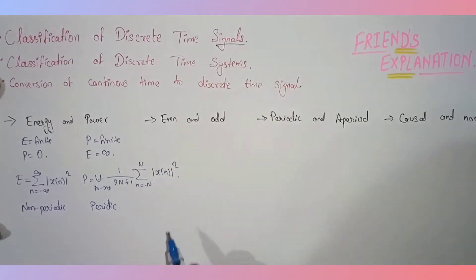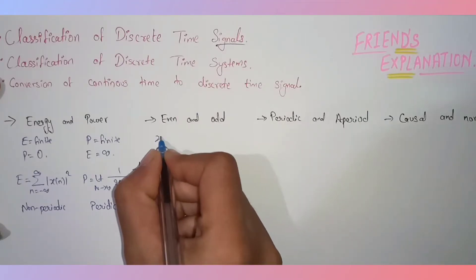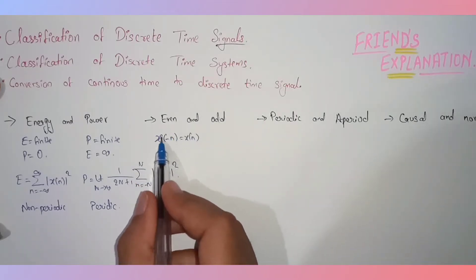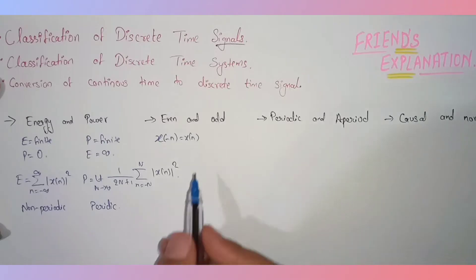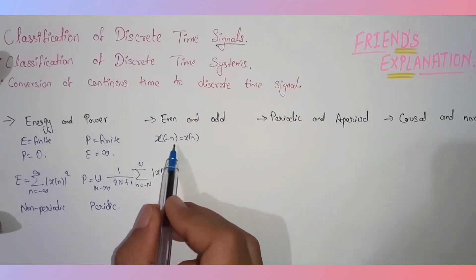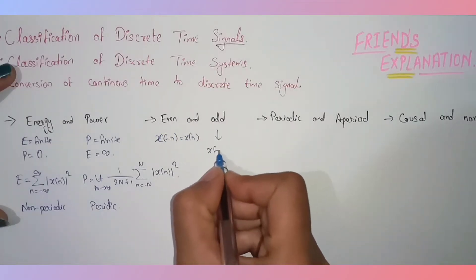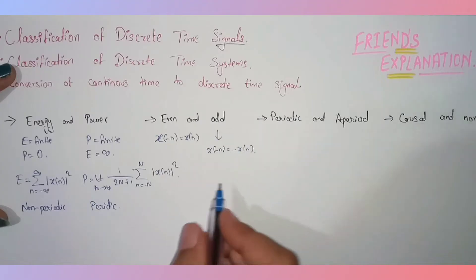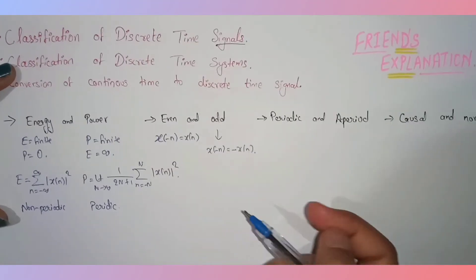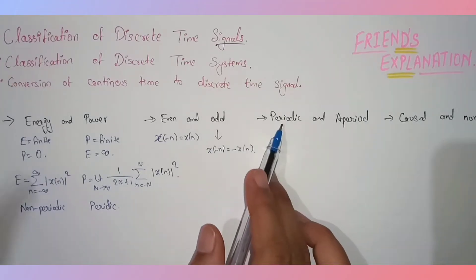Now let's discuss even and odd signals. A signal is even if it satisfies the condition x(−n) = x(n) — that means replacing n with −n gives the original signal with no change of sign. If replacing gives the negative of the signal, it is an odd signal. For example, cosine is an even signal and sine is an odd signal.